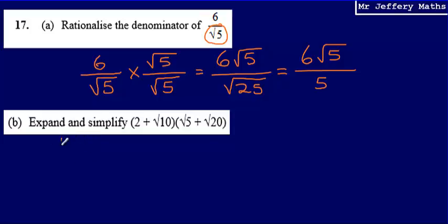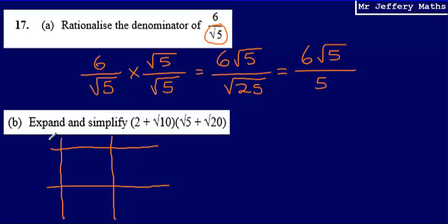The way I'm going to do this is I'm going to use a grid. I'm just going to draw out a grid and multiply 2 plus root 10 by root 5 plus root 20.